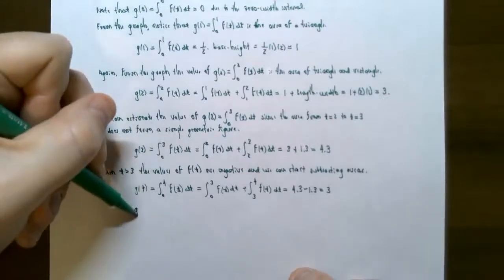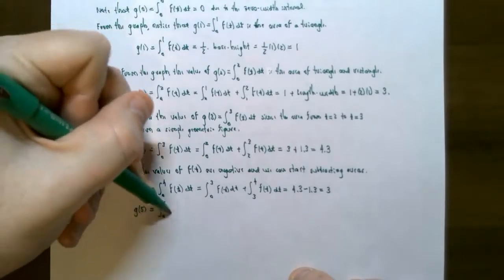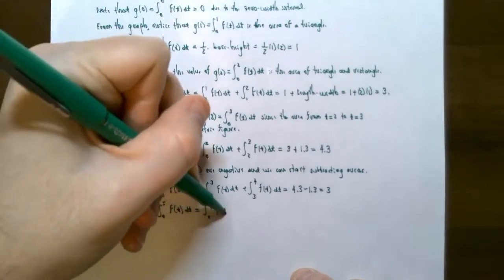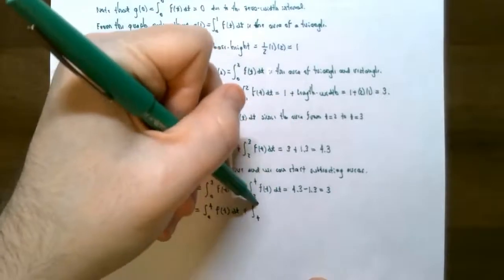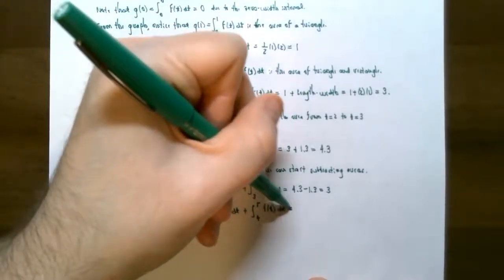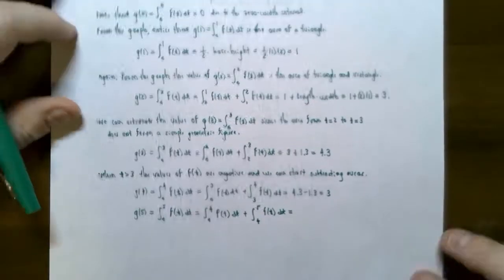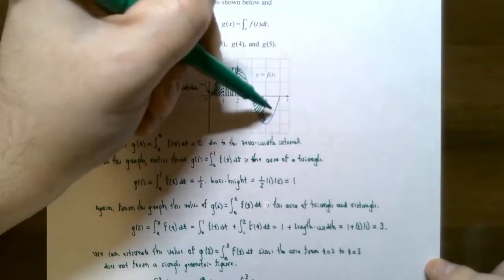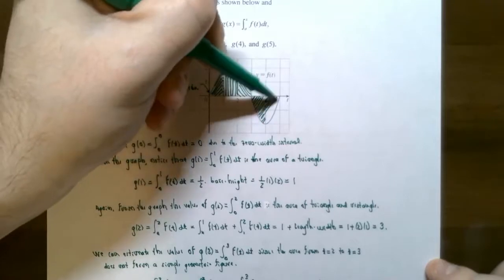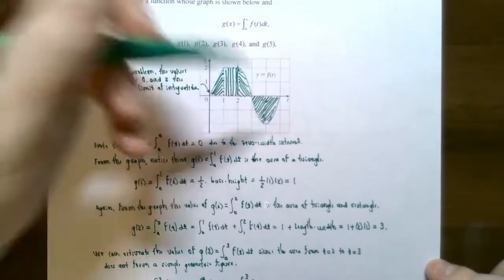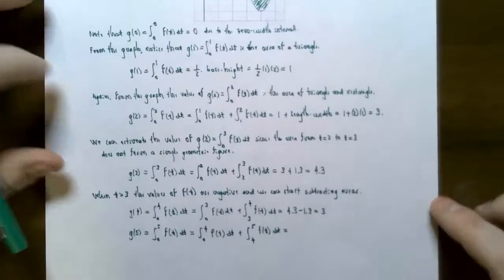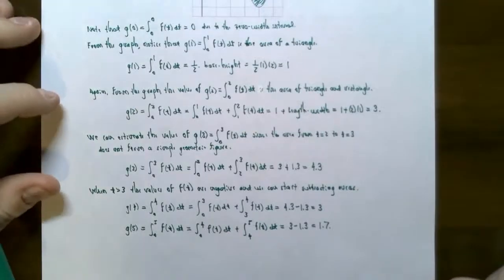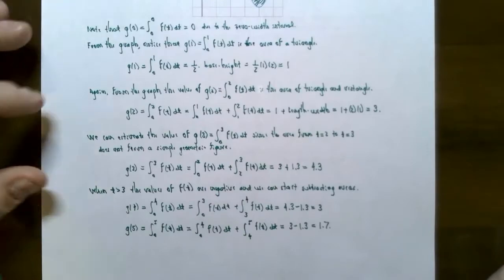Likewise, g of five is the definite integral from zero to five of f of t dt. It equals the area between zero and four (which is three) plus the last area from four to five. The graph from t equals three to t equals five looks symmetric about t equals four, so the area from four to five is also approximately 1.3. Subtracting again, the accumulated area from t equals zero to t equals five is about 1.7.